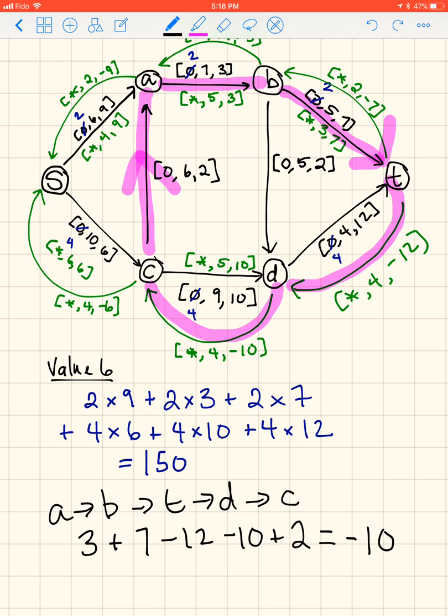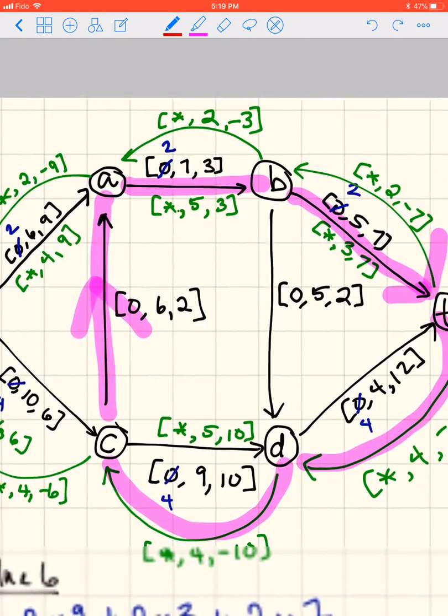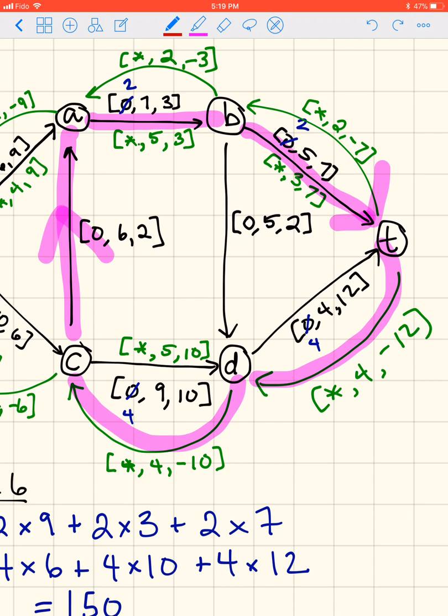So we update our flow accordingly. And this diagram is about to get very messy. Now, oh, first we need to figure out how many units we can do that with. Well, let's check our capacities.